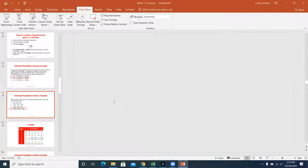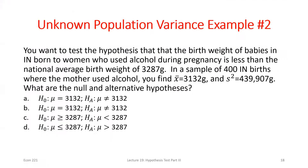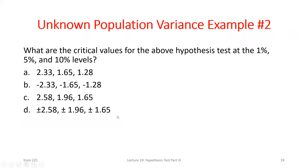Next example: we have birth data and want to test whether the Indiana average baby weight is less than the national average of 3,287. The alternative hypothesis is that Indiana's mean is less than 3,287, so the null assumes it's greater than or equal to that value. The word 'less than' in the alternative hypothesis means this is a left-tailed test.